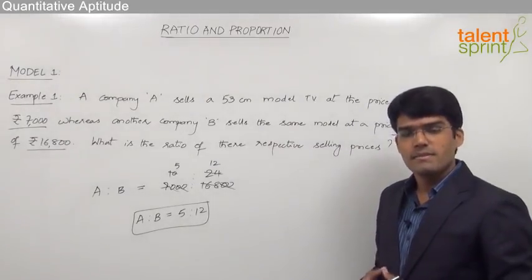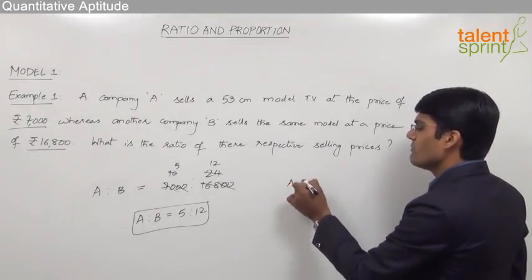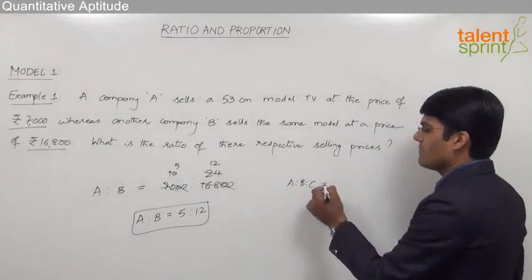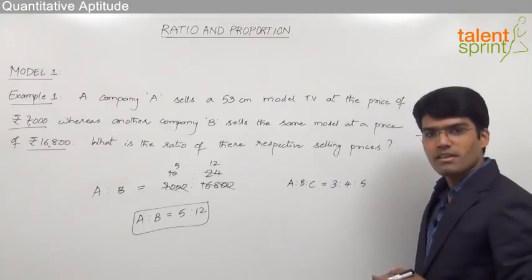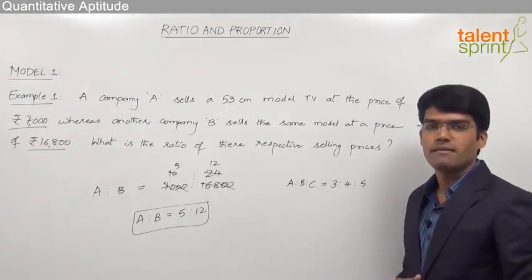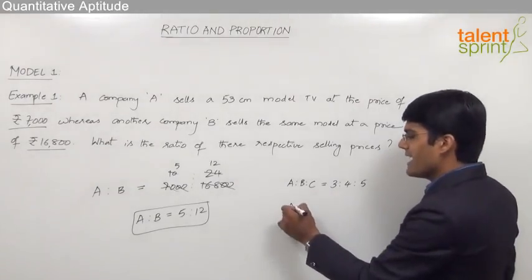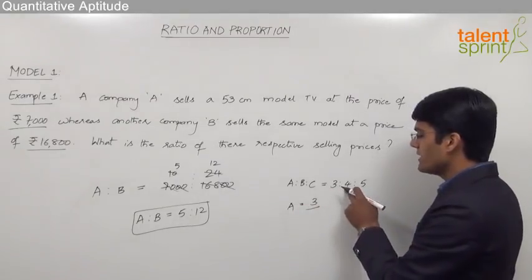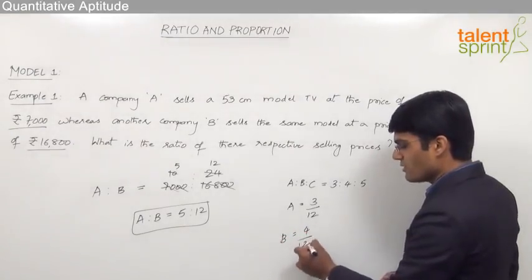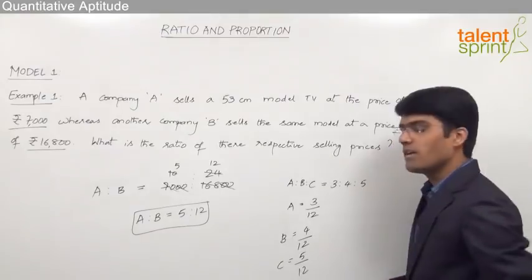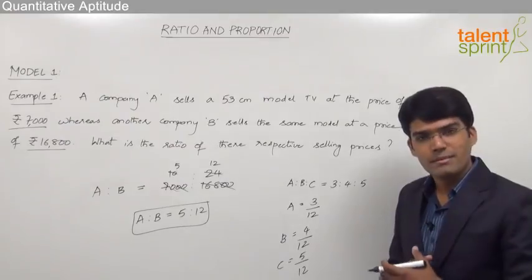Similarly, we can sometimes have three quantities which have to be compared, and there the ratio can be taken as A is to B is to C. For example, A:B:C = 3:4:5. The concept remains the same, but here we have a third quantity. The individual fractions are: A equals 3 parts out of total 12 parts, B has 4 parts out of 12, and C has 5 parts out of 12.